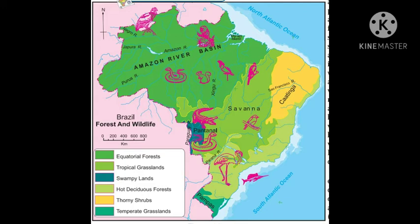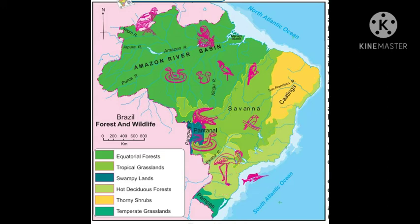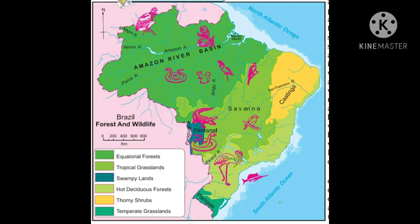Hot deciduous forest is found in the coastal sea area — that is where the hot deciduous forest is formed. The next is thorny scrub. Thorny scrub is also called hot desert forest. Tropical grassland uses a yellow color, called the savanna. The hot deciduous forest uses a different marking.